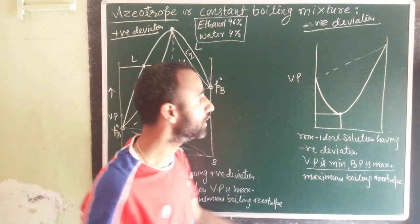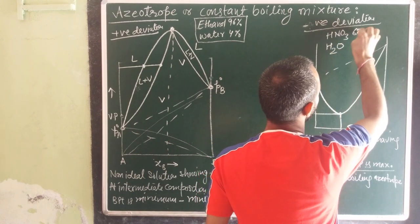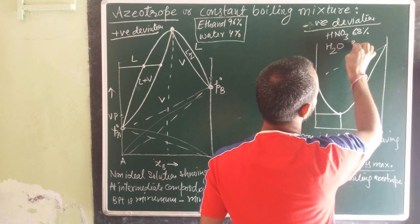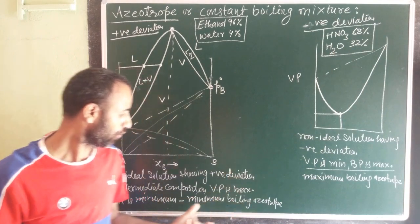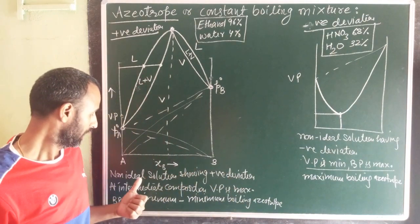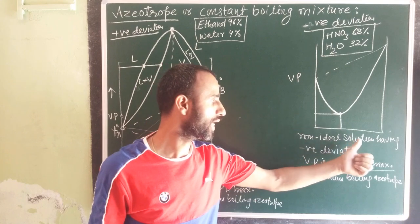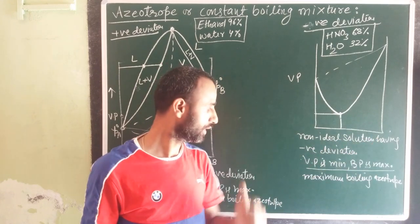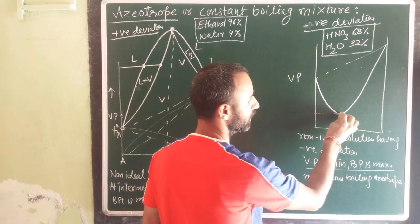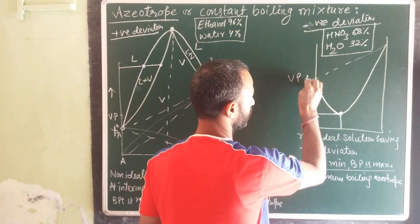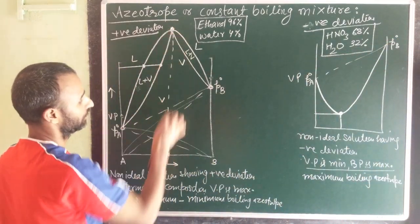The same applies for negative deviation. The best example is nitric acid and water: 68% nitric acid and 32% water. So, one type is minimum boiling azeotrope, shown by non-ideal solutions with positive deviation. The other is maximum boiling azeotrope, shown by non-ideal solutions with negative deviation, at an intermediate composition.